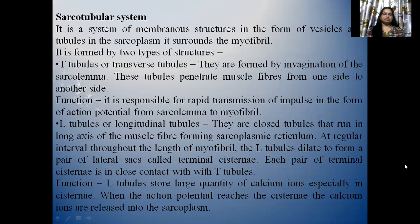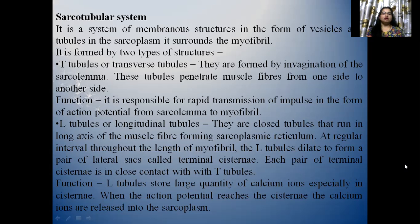Next is the sarcotubular system. It is a system of membranous structures in the form of vesicles and tubules in the sarcoplasm. It surrounds the myofibril. It is formed by two types of structures: T-tubules or transverse tubules and L-tubules or longitudinal tubules. T-tubules are formed by invagination of sarcolemma. These tubules penetrate muscle fibres from one side to another side and are responsible for rapid transmission of impulse in the form of action potential from sarcolemma to myofibril. L-tubules or longitudinal tubules are closed tubules that run in the long axis of the muscle fibre forming sarcoplasmic reticulum. At regular intervals throughout the length of myofibril, the L-tubules dilate to form a pair of lateral sacs called terminal cisternae.